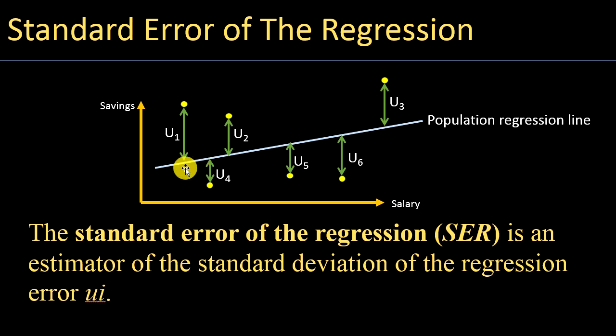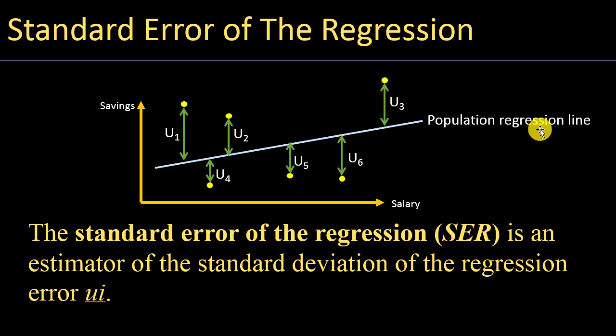Here I'm showing you the linear regression line, and this is a population regression line. In practice, we will not know the population regression line, because knowing it means we have all observations for the whole population. For example, if we are looking at the relationship between savings and salary of every individual working in a particular city with around 5 million individuals —